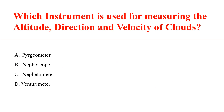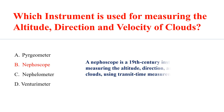Which instrument is used for measuring the altitude, direction, and velocity of clouds? The answer is a Nefoscope. A nefoscope is a 19th century instrument for measuring the altitude, direction, and velocity of clouds using transit time measurement.